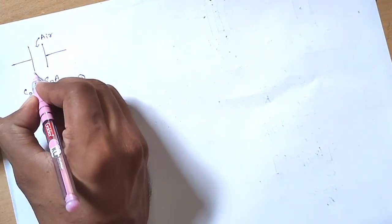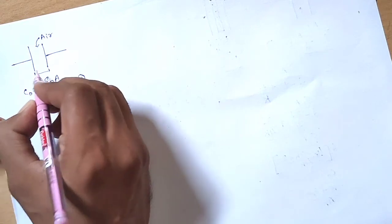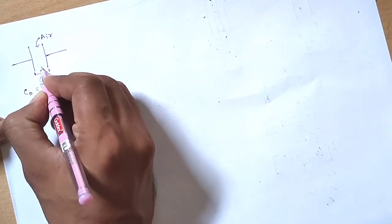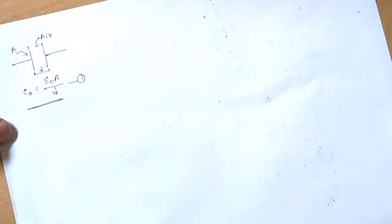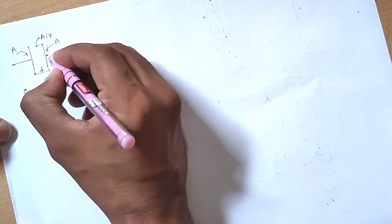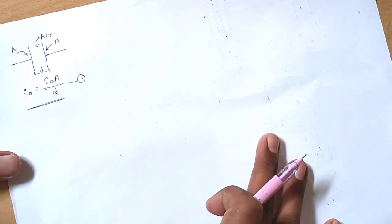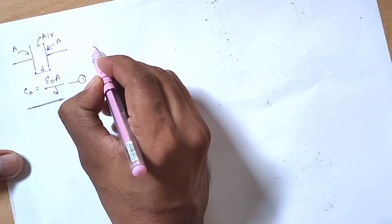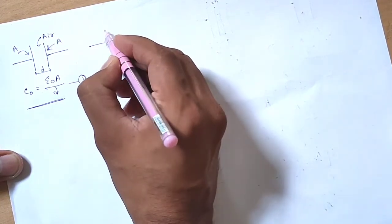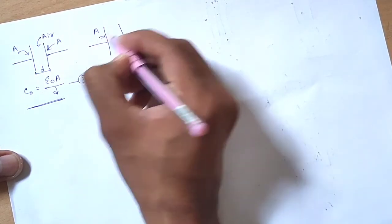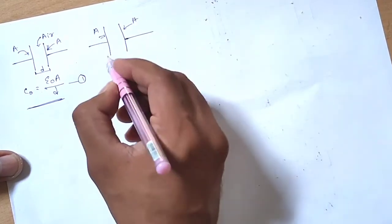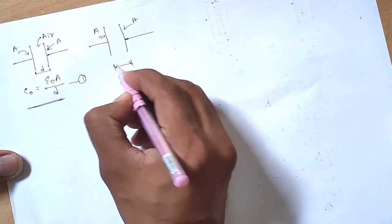As we know, for a parallel plate capacitor, the separation between them is distance d, and the area is capital A. According to the given data, we're inserting material into this capacitor. The area is the same, separation between them is small d which remains as it is.